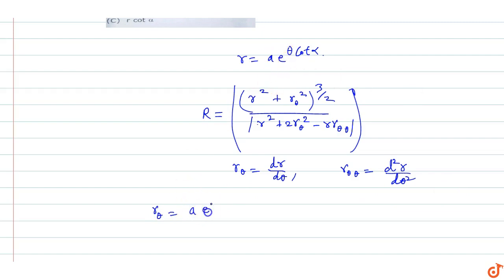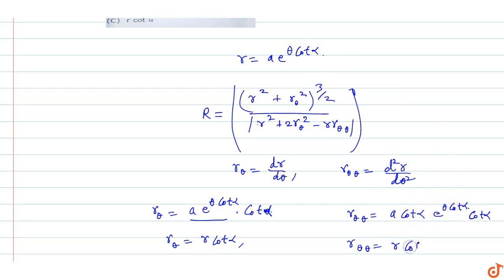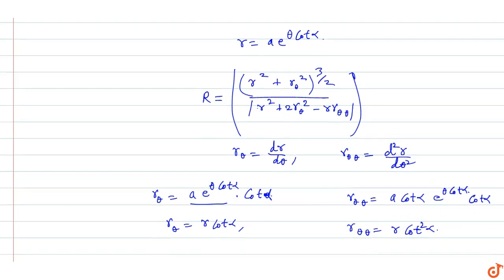Now differentiating r = a·e^(θ·cot α), we get r_θ equals a into e raised to power θ·cot α into cot α — which is simply r·cot α. Differentiating again, r_θθ equals a into e^(θ·cot α) into cot²α, which equals r·cot²α.